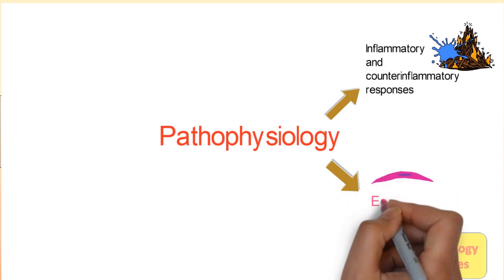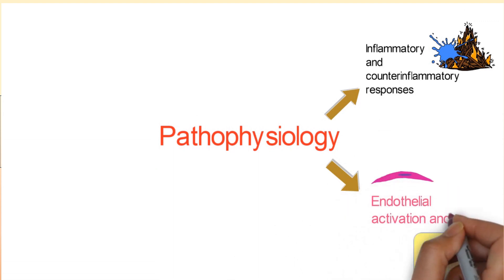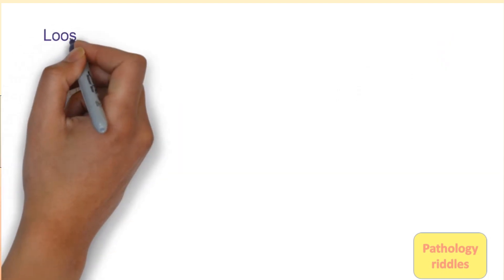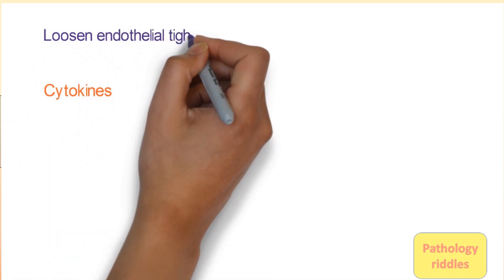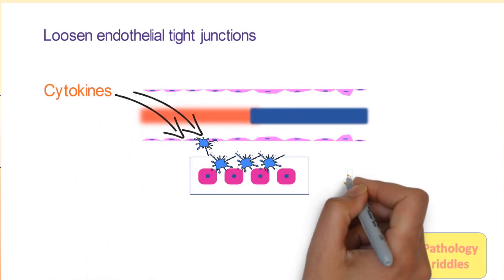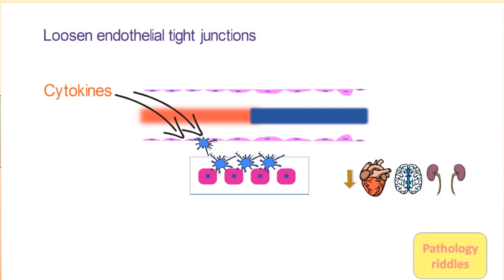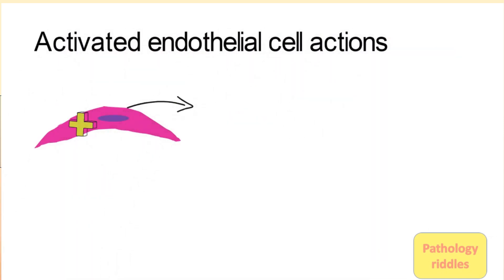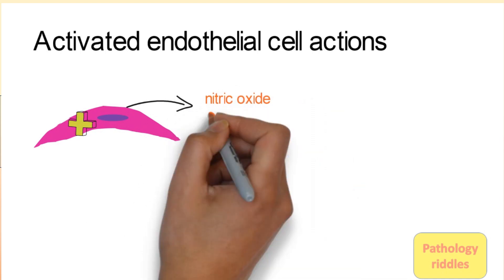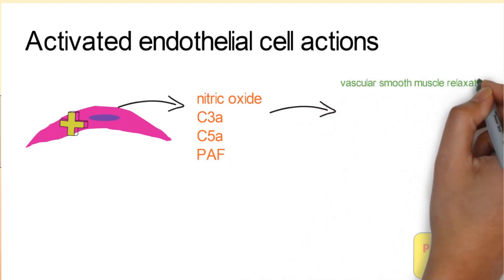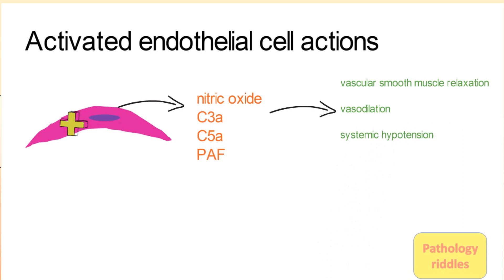Mechanism 2: Endothelial activation and injury. Cytokines loosen endothelial cell tight junctions, leading to increased vascular leakage and edema, meaning organs are not provided with adequate nutrients and oxygen, and waste is not efficiently removed. Activated endothelial cells also increase production of nitric oxide, C3a, C5a, and PAF, which cause vascular smooth muscle relaxation, vasodilation, and systemic hypotension.